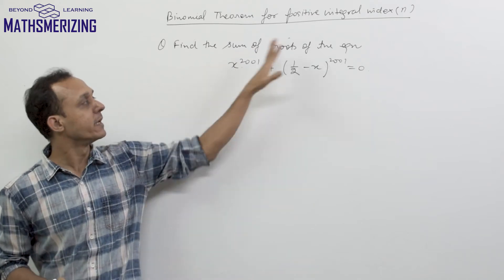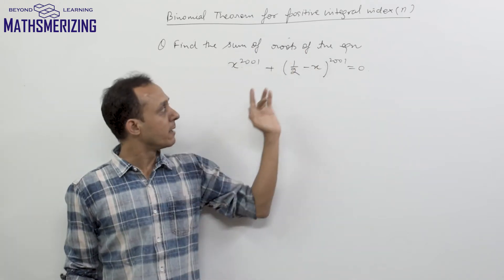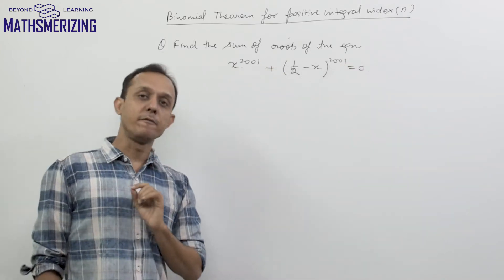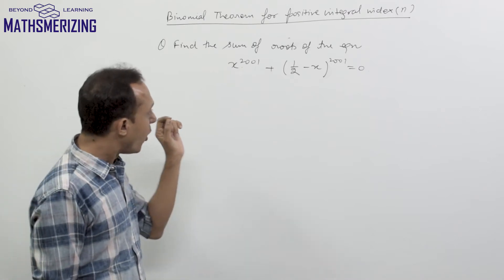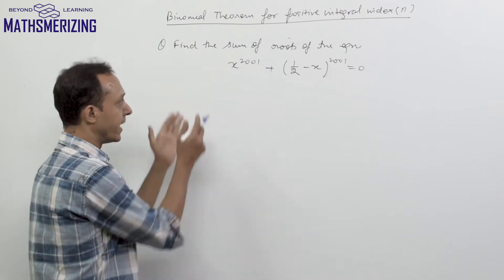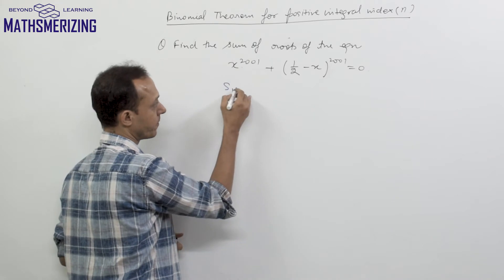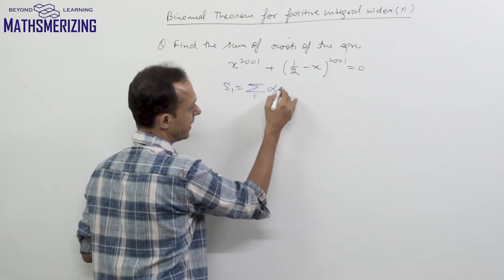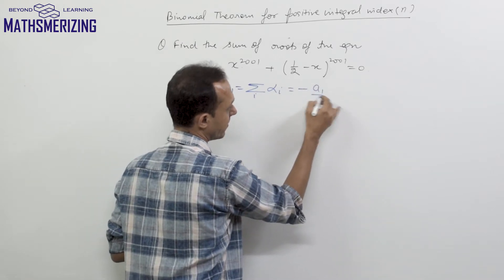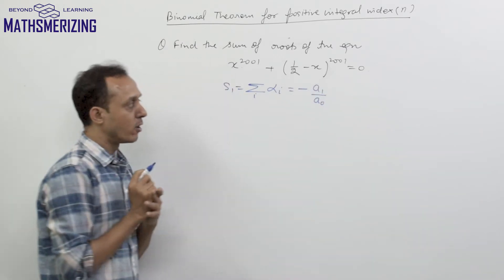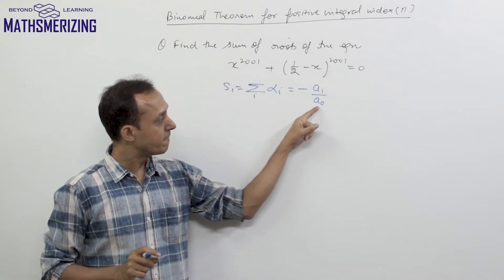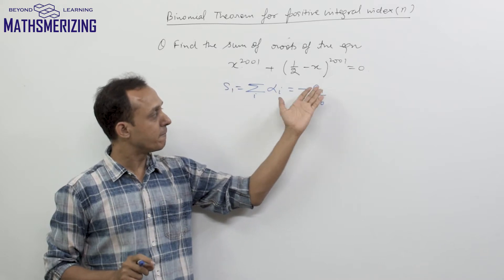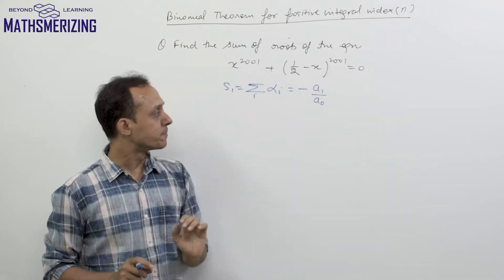Another question: find the sum of all the roots of the equation x to the power 2001 plus (1/2 minus x) to the power 2001 equals 0. From the theory of equations, we know that the sum of all the roots of any polynomial equation, which is S1, written as summation over all i of alpha_i, equals minus a1 upon a_naught, where a_naught is the coefficient of the highest power of x and a1 is the coefficient of the power of x that is just one less than the highest power.